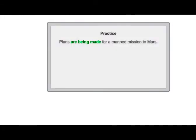Ready for some practice? Let's look at a few more examples — decide why each sentence is in the passive. 'Plans are being made for a manned mission to Mars.' Who is making the plans? We can assume scientists or a government agency; we don't need to say exactly who.